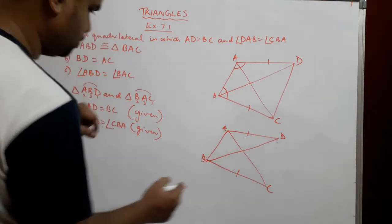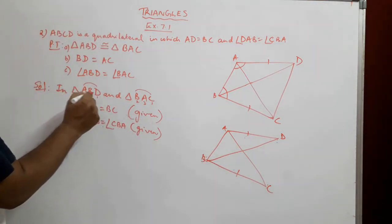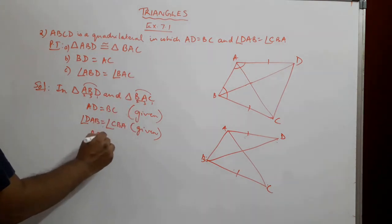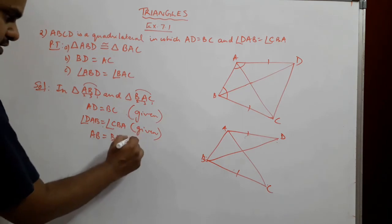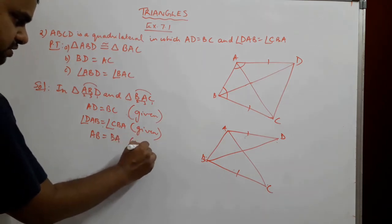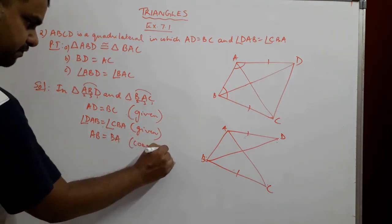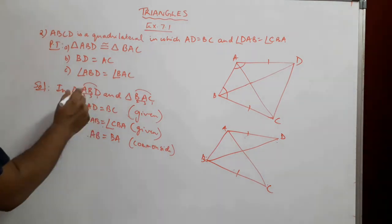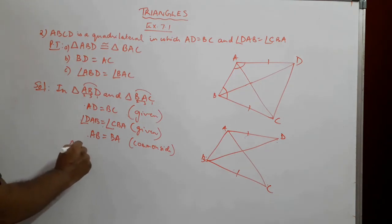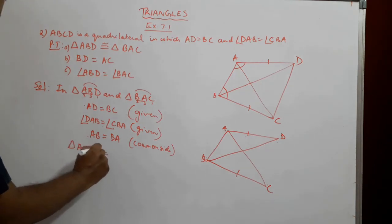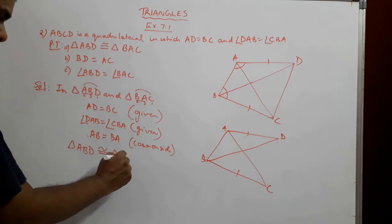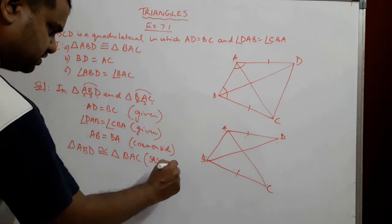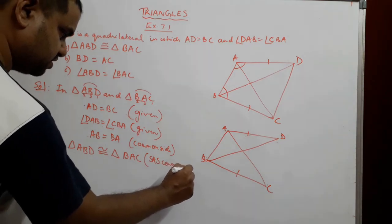This side AB is common to both triangles. So we have side, angle, side. We can prove that triangle ABD is congruent to triangle BAC by the SAS congruence criterion once again.